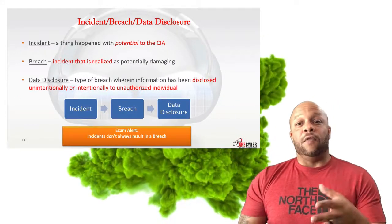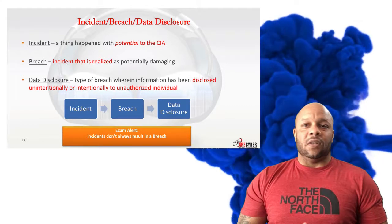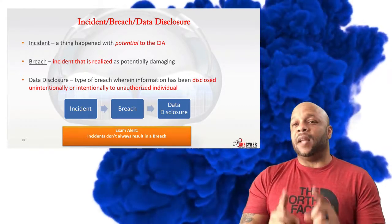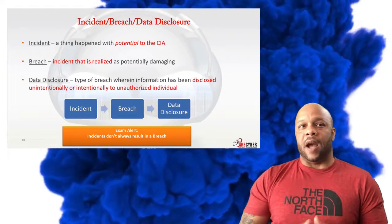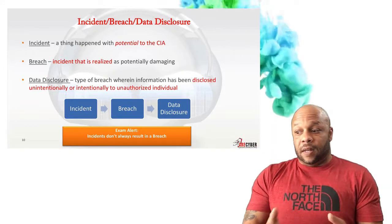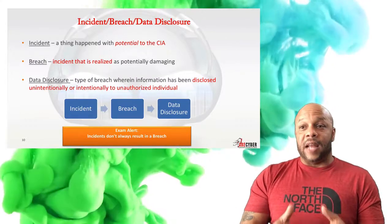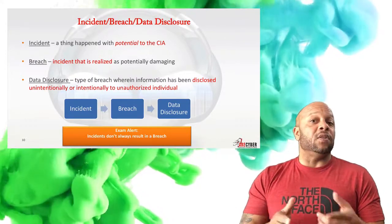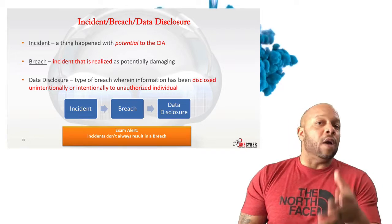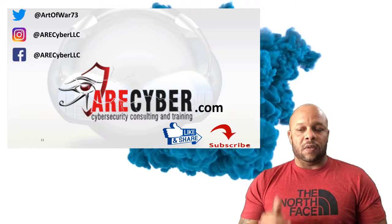The final topic we'll cover today is incident, breach, and data disclosure. Incidents are things that have the potential impact on the CIA, where a breach is simply an incident that has been realized. And data disclosure is categorized as data that has been disclosed either through unintentional or intentional means to an unauthorized individual. That's going to do it for this section.